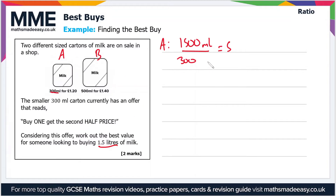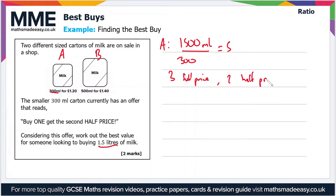With the buy one get the second half price offer, the first carton is full price, the second is half price, the third full price, the fourth half price, and the fifth full price. So we buy three at full price and two at half price. That's 3 × £1.20 plus 2 × £0.60 (half of £1.20), which gives us £4.80 for Brand A.